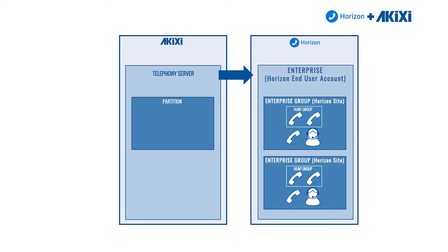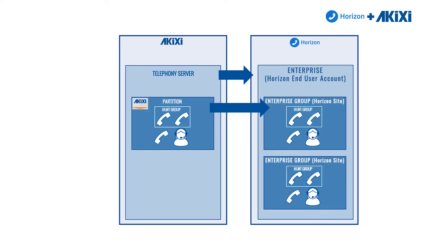Moving on to connecting partitions with enterprise groups. We'll start by applying a site license and connect the partition directly to the enterprise group this time. When synchronized, only entities from within the connected enterprise group will come across to the partition.